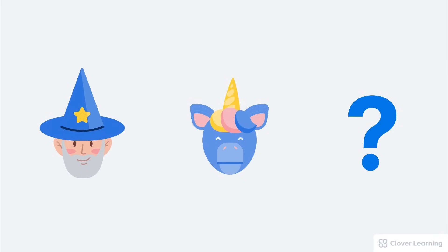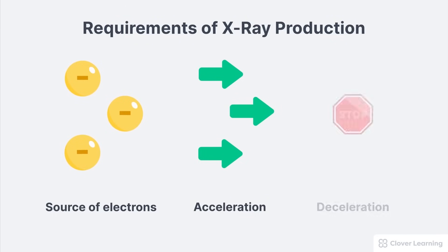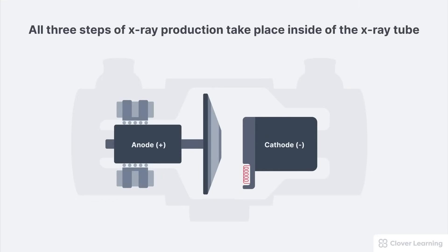X-rays are real and they have to be created in a very specific way. There are three requirements of X-ray production: a source of electrons, a means of rapidly accelerating or energizing those electrons, and a means of rapidly decelerating or de-energizing those electrons. If any of these requirements are missing, X-rays won't be produced.